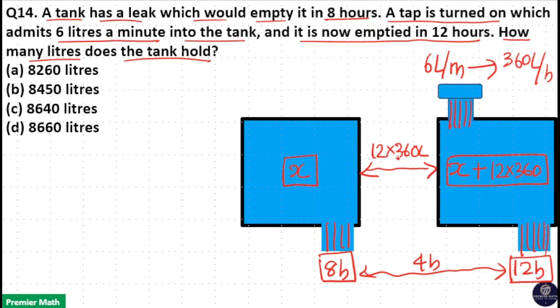12 times 360 liter means, here, 360 times 10 is 3600, 360 times 2 is 720, so total 4320 liter.